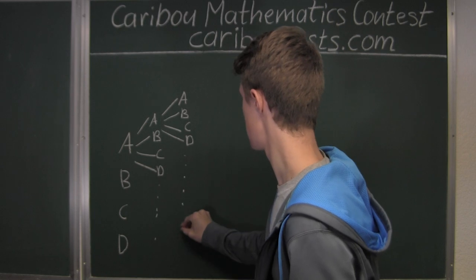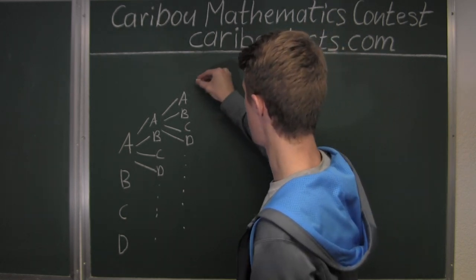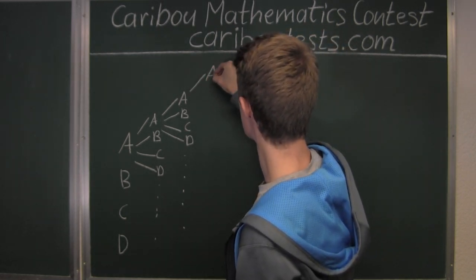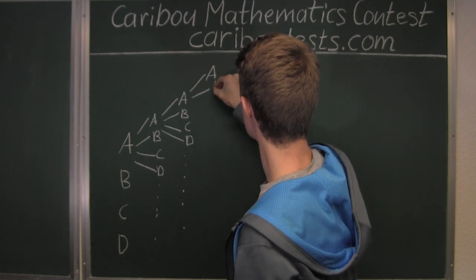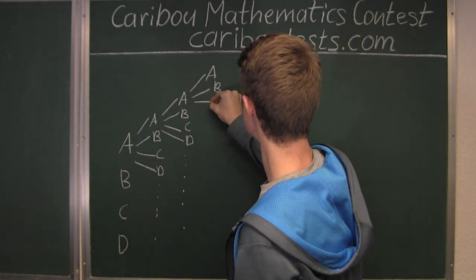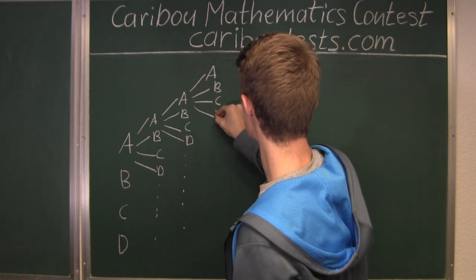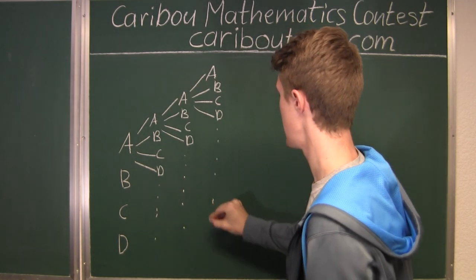And so on. So for A, we have A, B, C, and D, and so on.